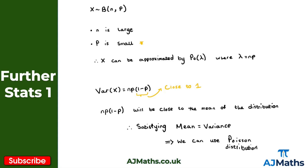So there we have it. The key points are these two conditions: n is large and p is small. In that case we can use the approximation. The variance discussion is just intuition for why the approximation works - you won't be asked to prove it, but it helps illustrate the reasoning. So that's everything we need to get started. Let's take a look at some practice questions using the Poisson distribution to approximate the binomial distribution.